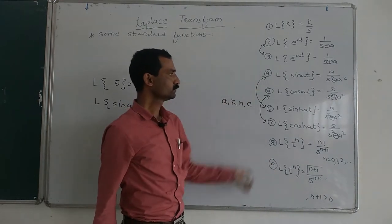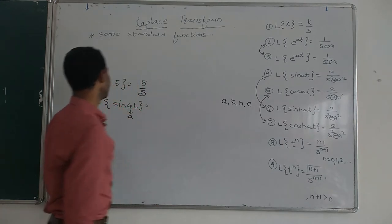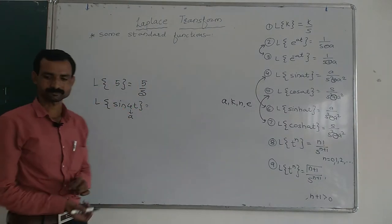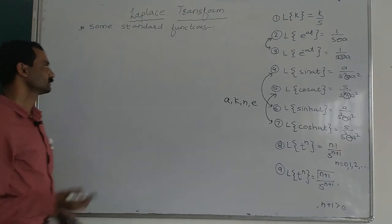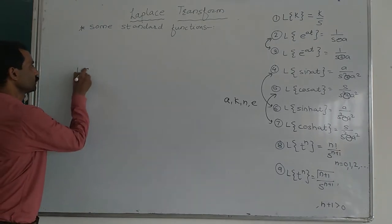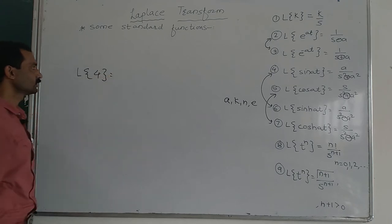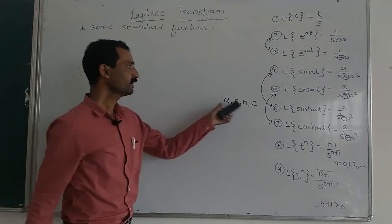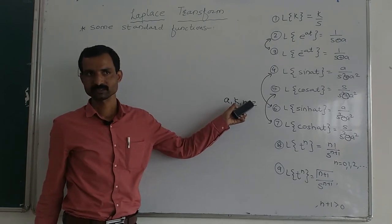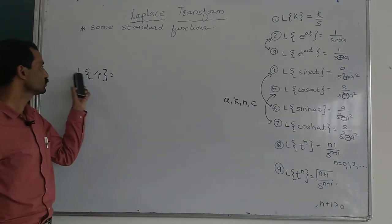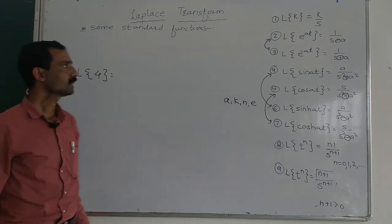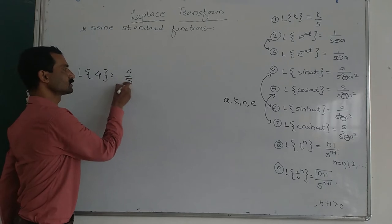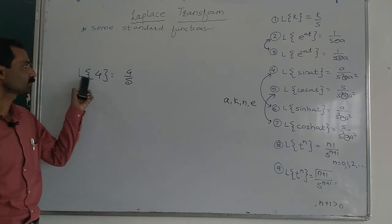How to use this formula? Let me take one example. We have to find Laplace of 4. Here 4 is a constant, and in all these formulas, a, k, and l are constants. So we use formula number 1: Laplace of k is k upon s. That means Laplace of 4 is 4 upon s. This way we can find the Laplace of any constant number.